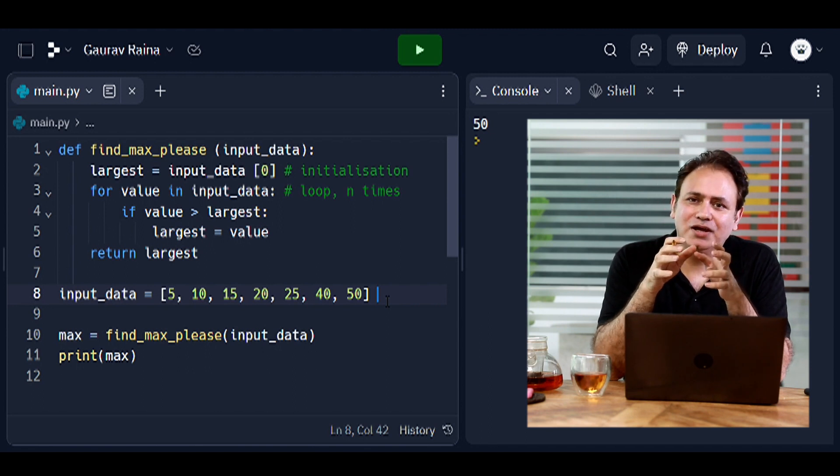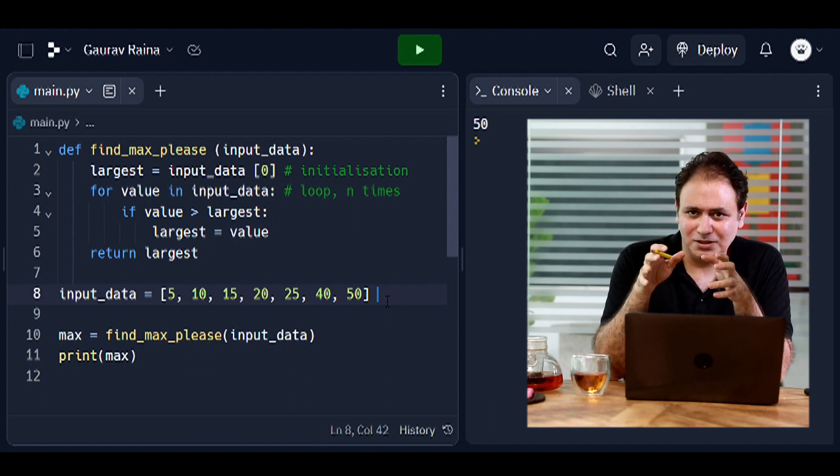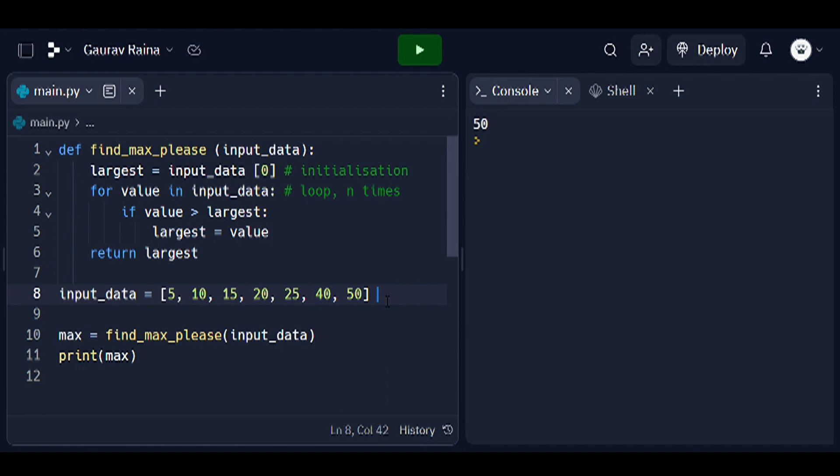And now let's actually go ahead and play with the code a little bit. So we've got your input data, and if you actually just manually inspect the data, you'll see that the largest element is 50. So let's run our program. There you go. It picked it up, 50.